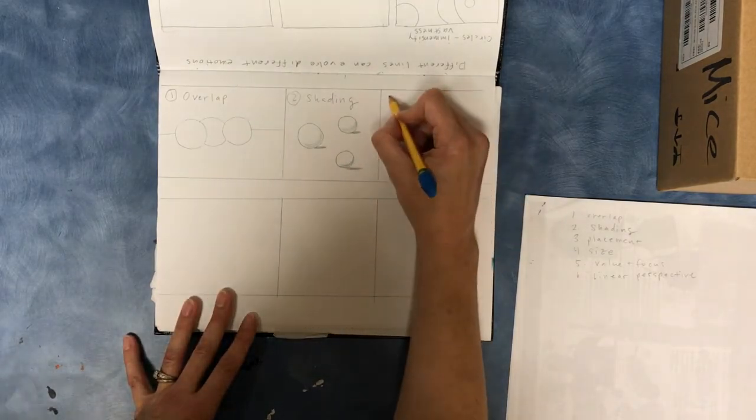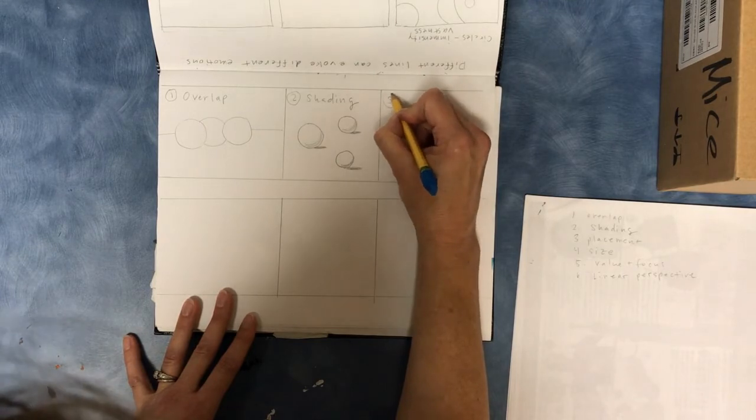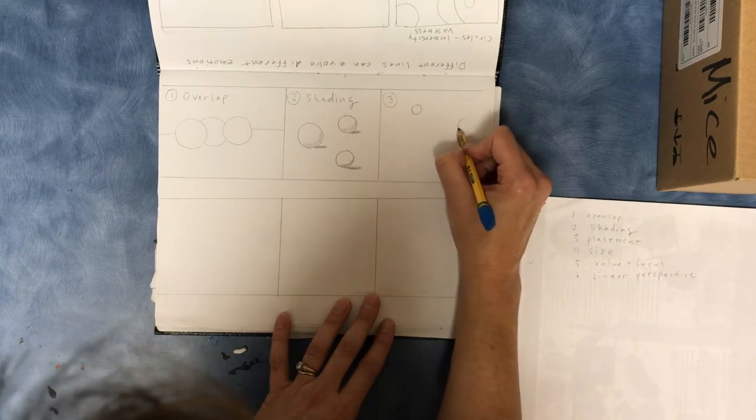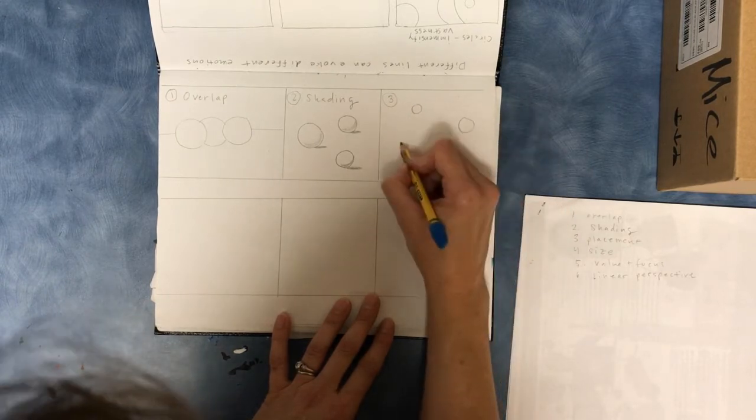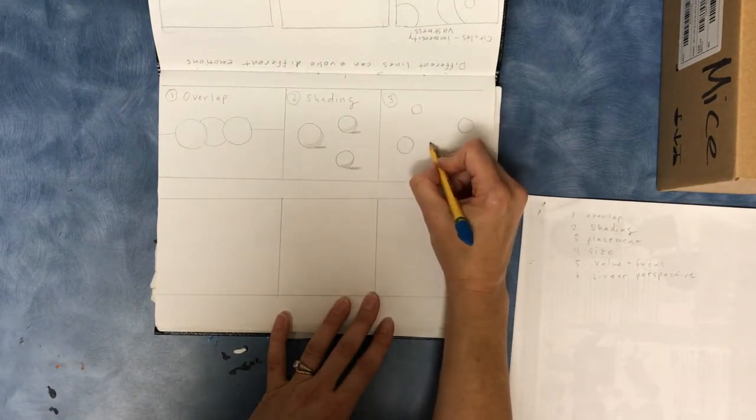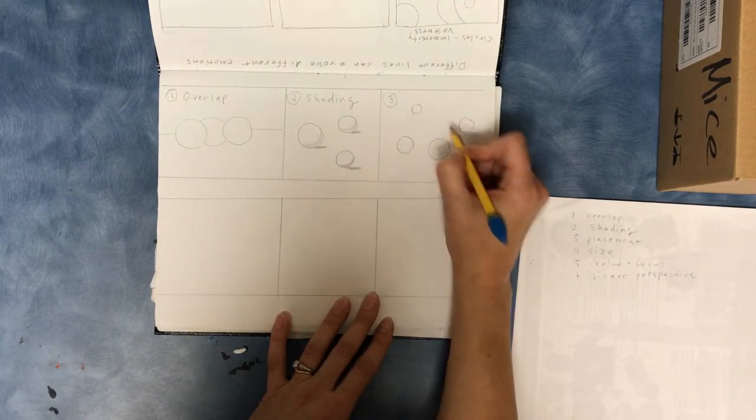Number three is placement. So for placement, you're just going to have shapes all around. In the back, they'll be small, in the front, they'll be big.